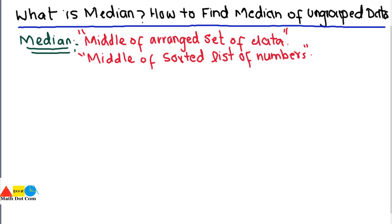The median is basically the middle of an arranged set of data. Two key things to notice: the word 'middle' and the word 'arranged.' This means your data should be arranged in ascending order, and you find the middle of that data to get the median. It is also defined as the middle of a sorted list of numbers.